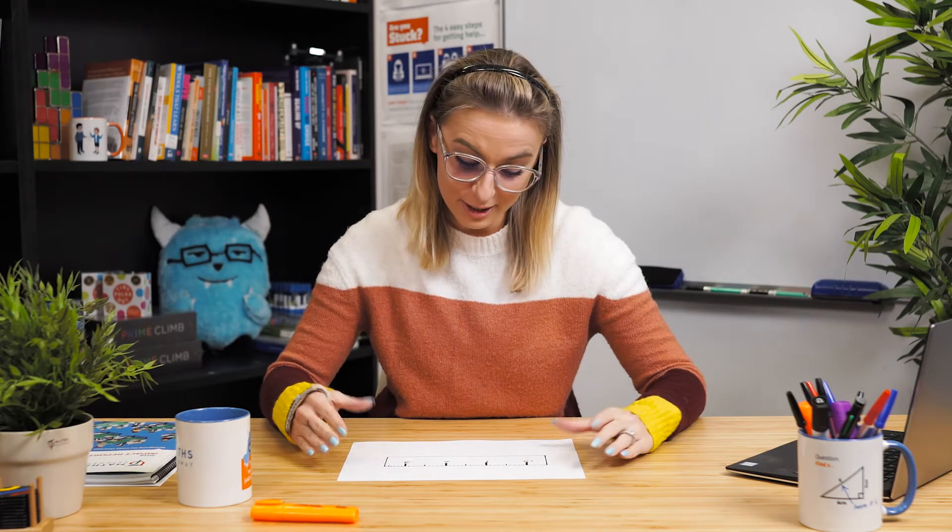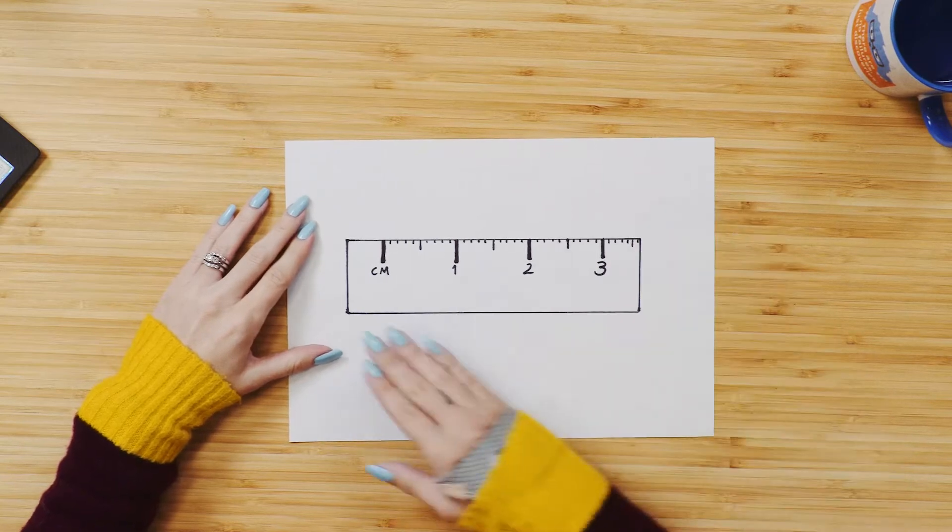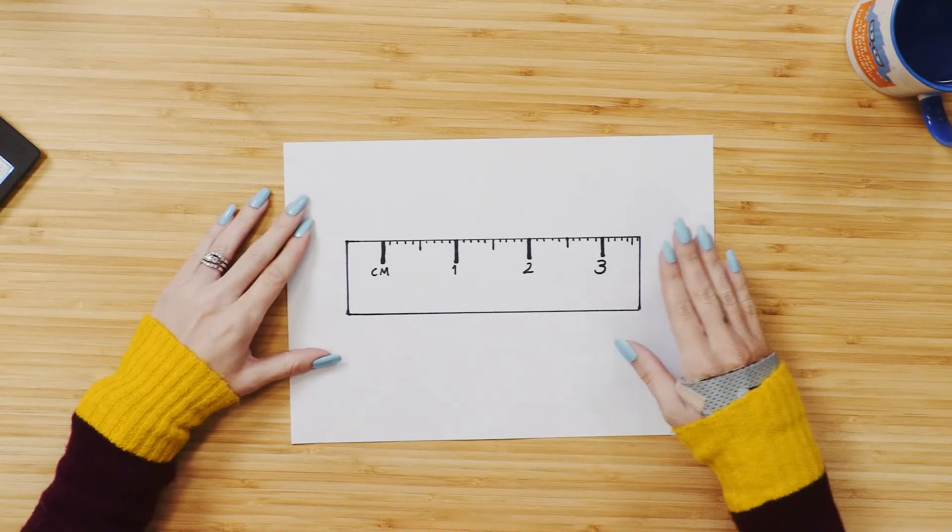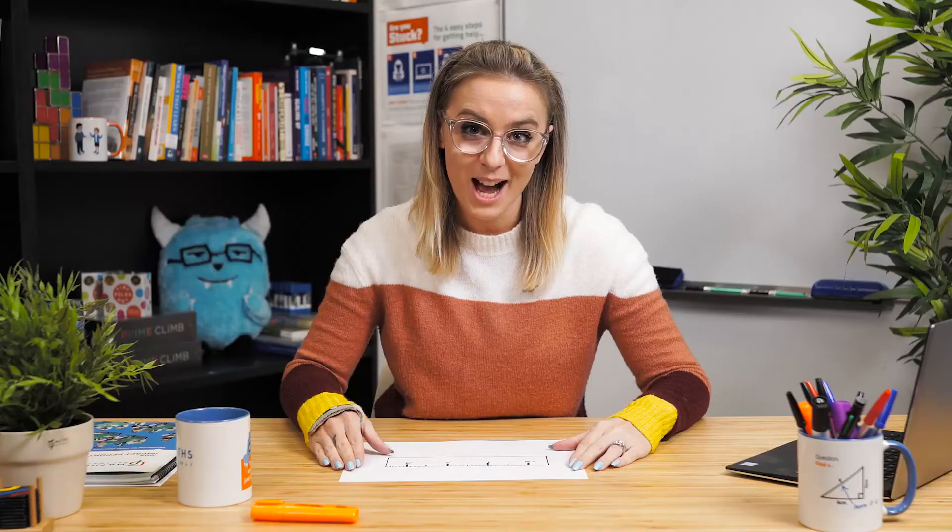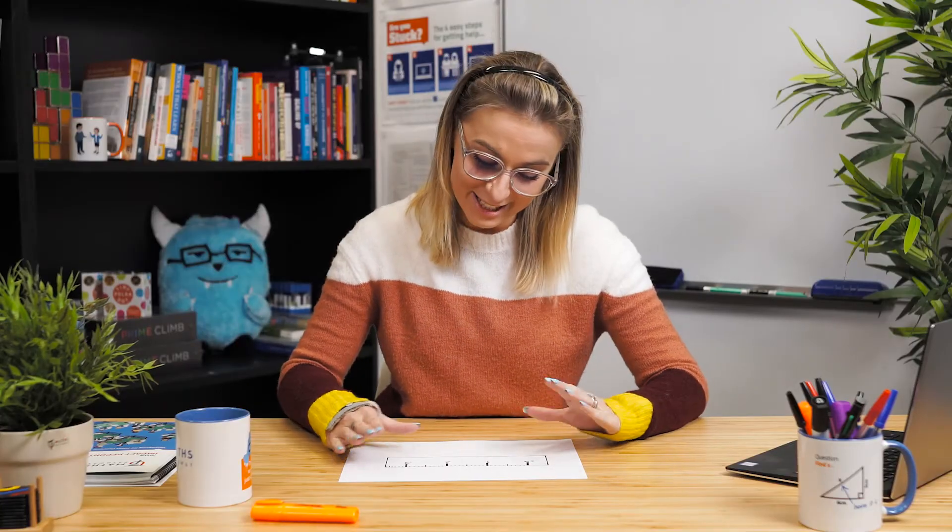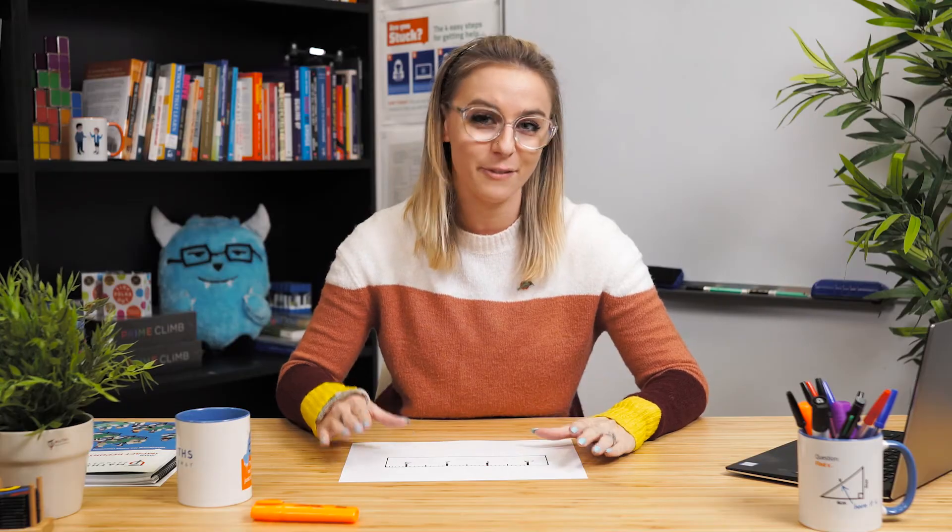Here's my ruler. Now I can look at this ruler in lots of different ways but there's actually three different ways that I can count on this ruler. I can count in ones, I can count in tens and I can also count in fives. Sounds confusing but let's break it down.